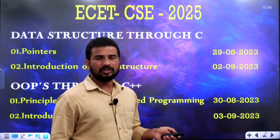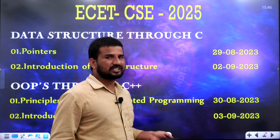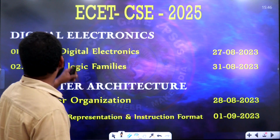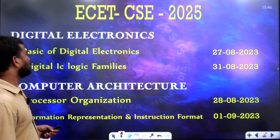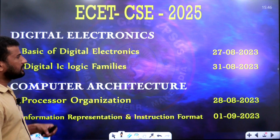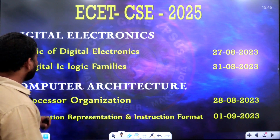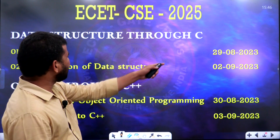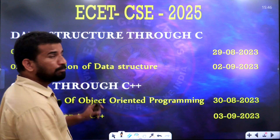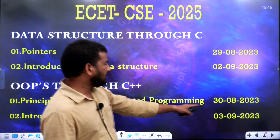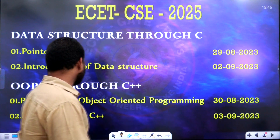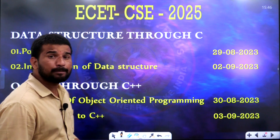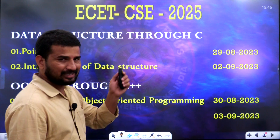In all the subjects, we will check the 1st unit and the date. The 27th: Basics of Digital Electronics. The 28th: Processor Organization. The 29th: Pointer Smith exam. The 30th of August: Principles of Object Oriented Programming.